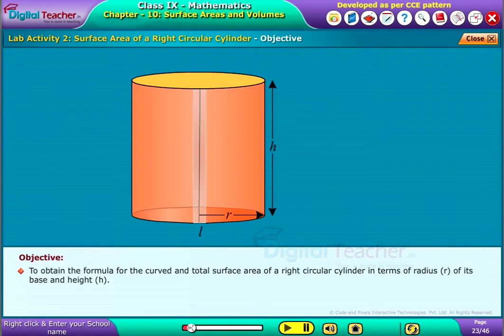The objective of this activity is to obtain the formula for the curved and total surface area of a right circular cylinder in terms of radius r of its base and height h.